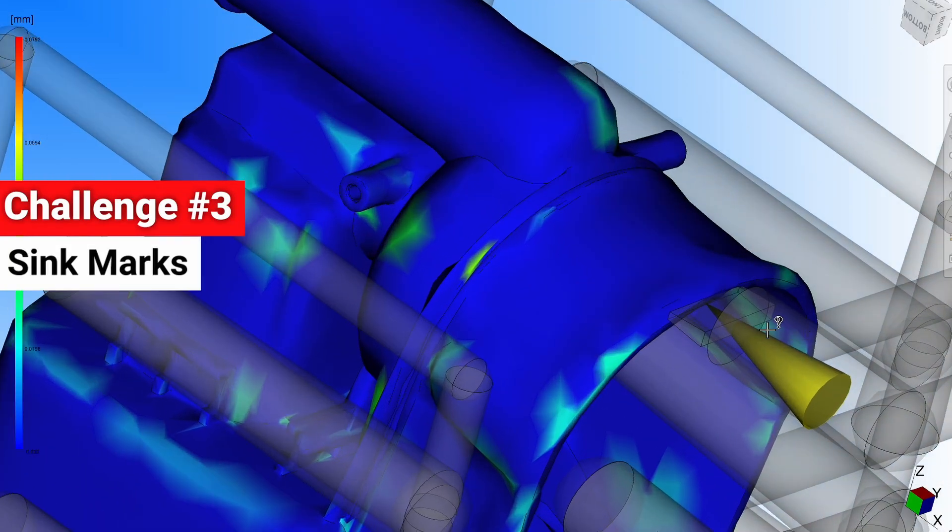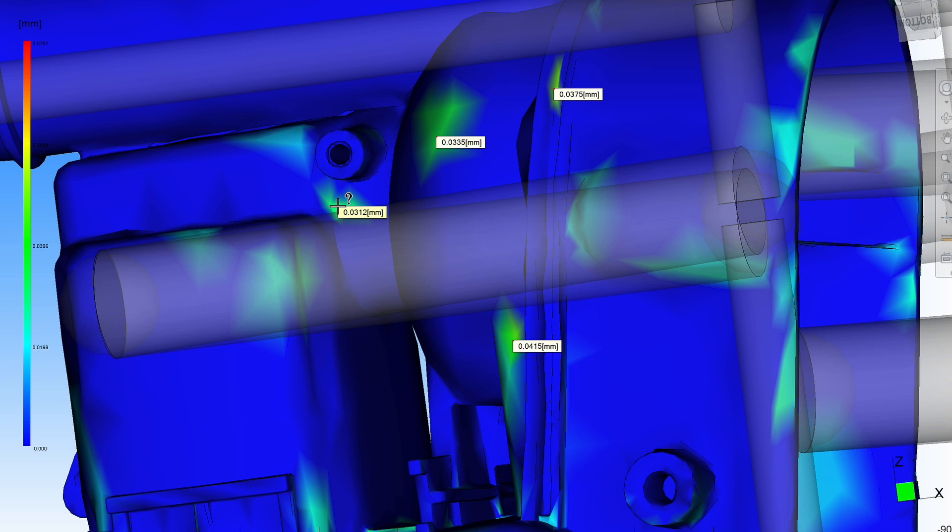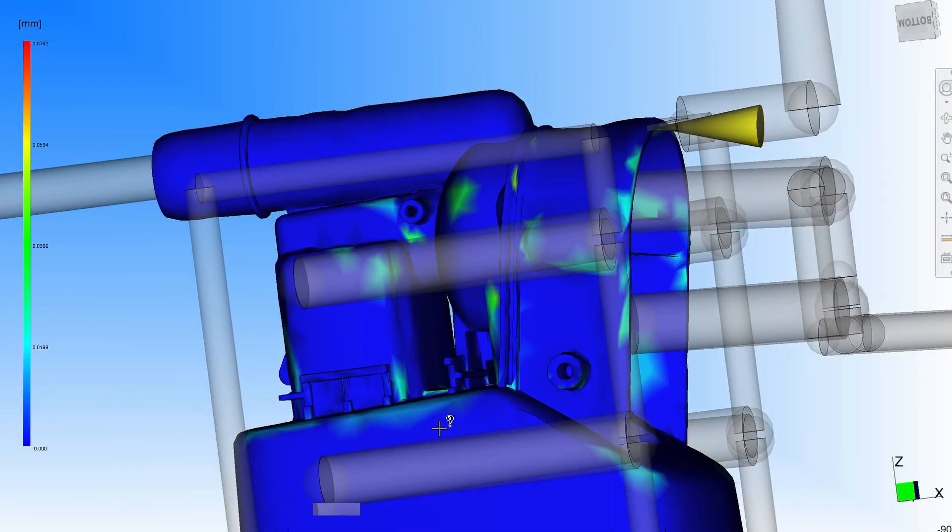Mold flow also identified potential sink marks, which you can see here. This sink occurs right where these two wall sections meet on the other side. Sink is caused because the extra mass here cools and shrinks slower, pulling the adjacent side in.